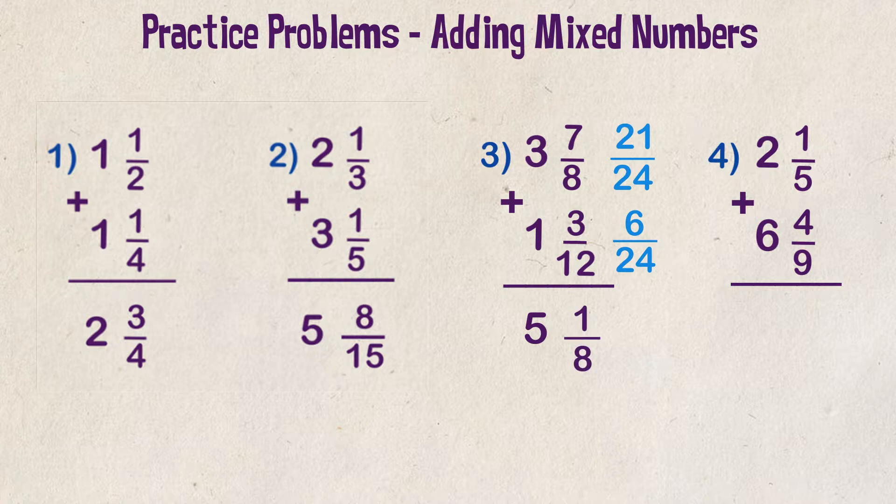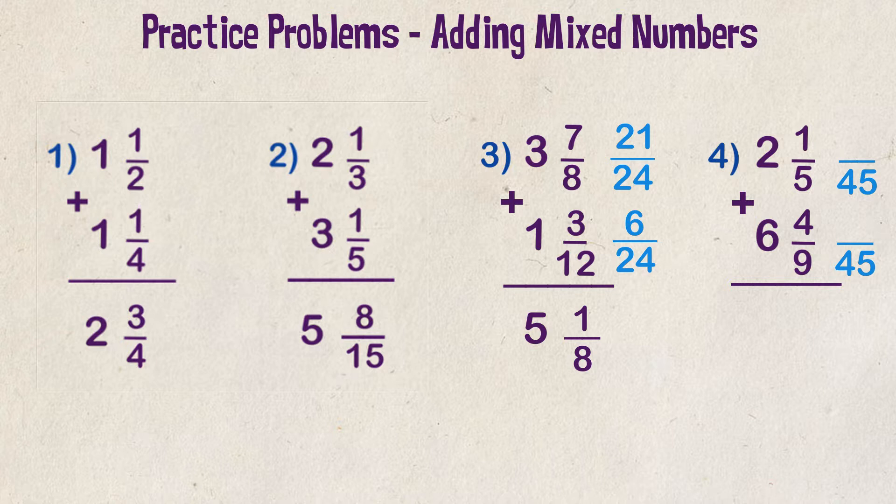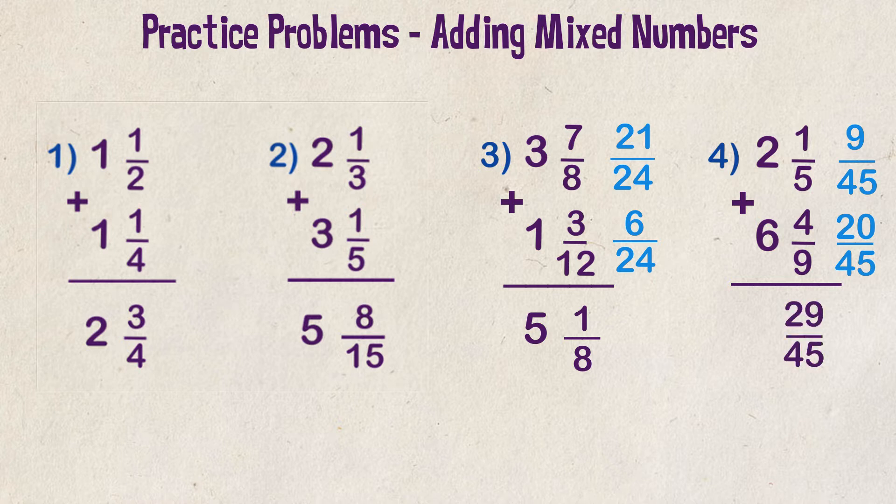Last example: add two and a fifth plus six and four ninths. We need to change our fractions into equivalents using a denominator of forty-five as that is the lowest common multiple between our two current denominators. We multiply both numerator and denominator by nine for the first fraction and it gives us nine over forty-five. For the second fraction, we multiply the numerator and denominator by five and we get twenty over forty-five. We add the numerators together and we get twenty-nine over forty-five. Finally, add the whole numbers and we get eight. Eight and twenty-nine forty-fifths is our final answer.